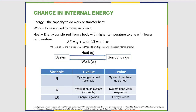Energy is the capacity to do work or transfer heat — you can think of it essentially as a quantity. Something can have high energy or low energy. You could think of energy kind of like money. Work and heat are ways to transfer that energy, like a check or a credit card. Those are two ways that people transfer money from one person to another. Similarly, energy is a quantity and work and heat are the ways for two objects to transfer that quantity.